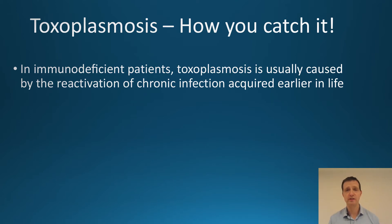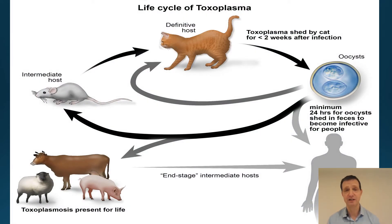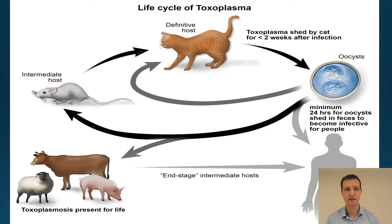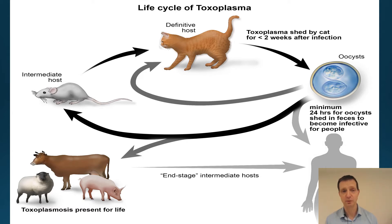In immunodeficient patients, Toxoplasmosis is usually caused by reactivation of chronic infection acquired earlier in life. This is the life cycle: where you find mice and rats you tend to find cats. Cats kill the mice and rats, and in the cat's digestive system the Toxoplasmosis multiplies and reproduces sexually. Within two weeks the oocysts are shed in the cat's feces, where humans can pick them up. You also find mice wherever cattle, sheep, and pigs are — on farms — where cats are also common, which is why undercooked meat can be a problem for Toxoplasmosis infection.